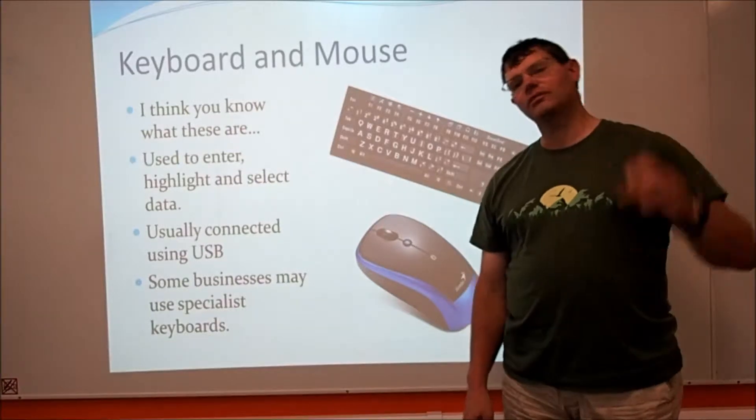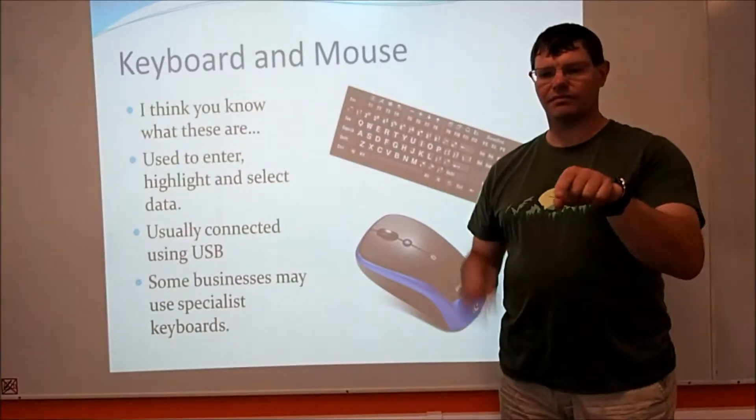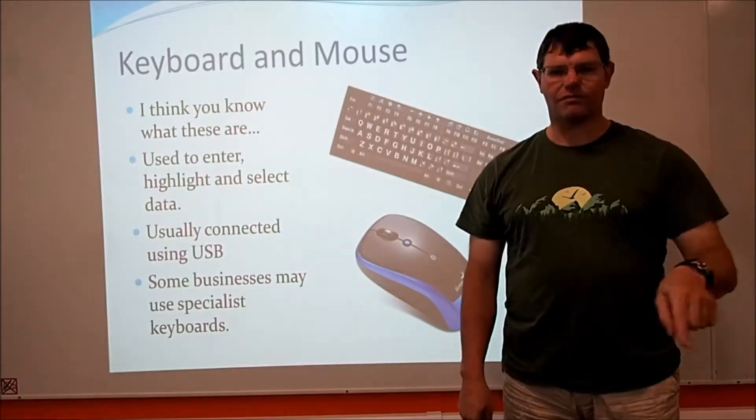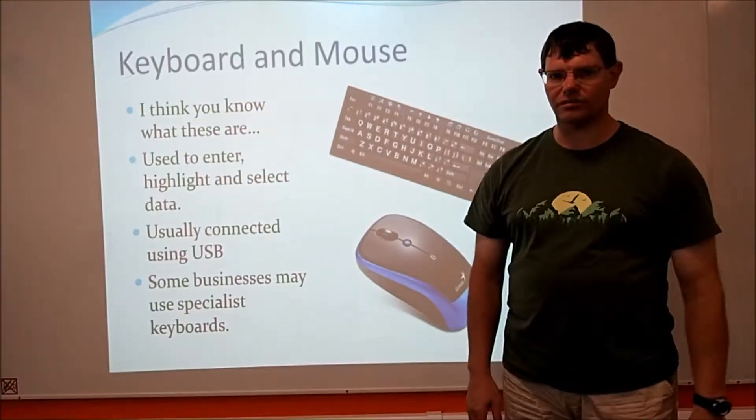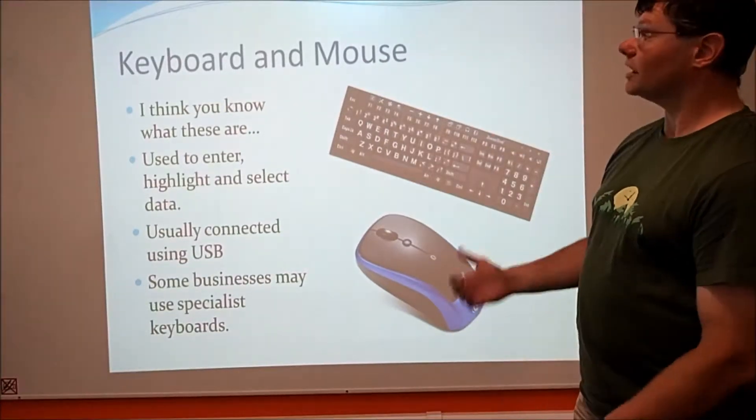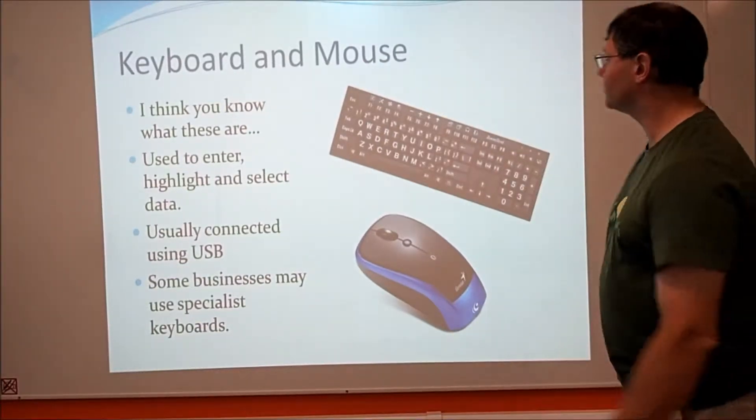If you've ever been behind the tills in a McDonald's or something like that, they have different buttons like push this for a Big Mac, this for a large milkshake, that for a small Coke. It just saves you having to type in things, makes it quicker and easier for people working there. That's about what there is on keyboards and mouse, all fairly straightforward.